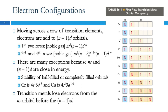We've got things like half-filled orbitals are especially stable and completely filled orbitals are especially stable. If we look at something like chromium, we would expect chromium to have 4s2 and 3d4, and yet it doesn't — it has 4s1 and 3d5.